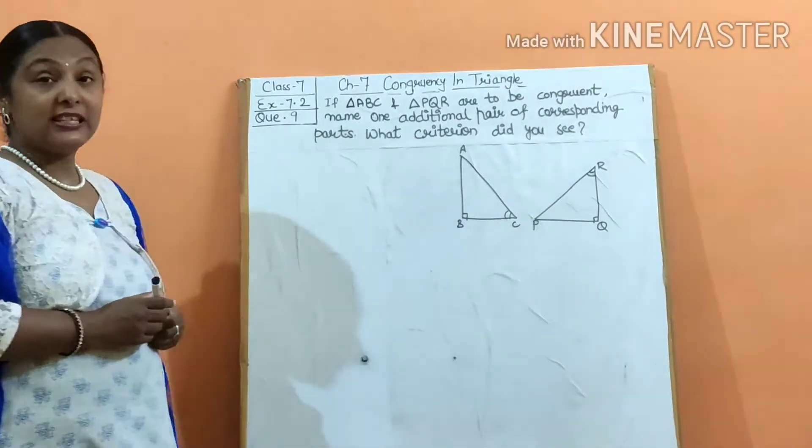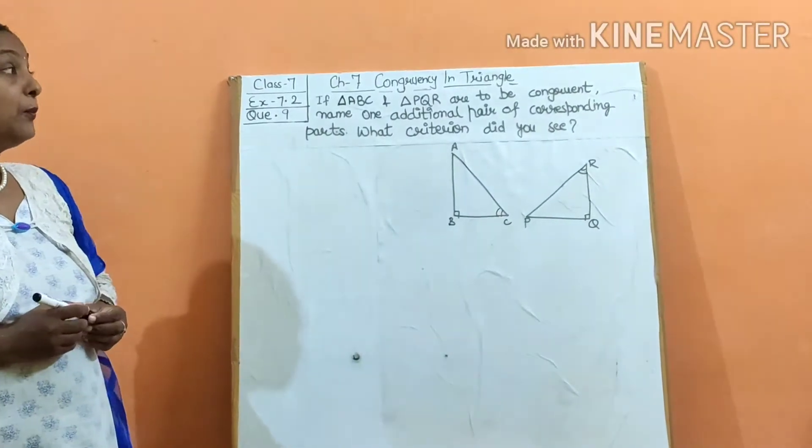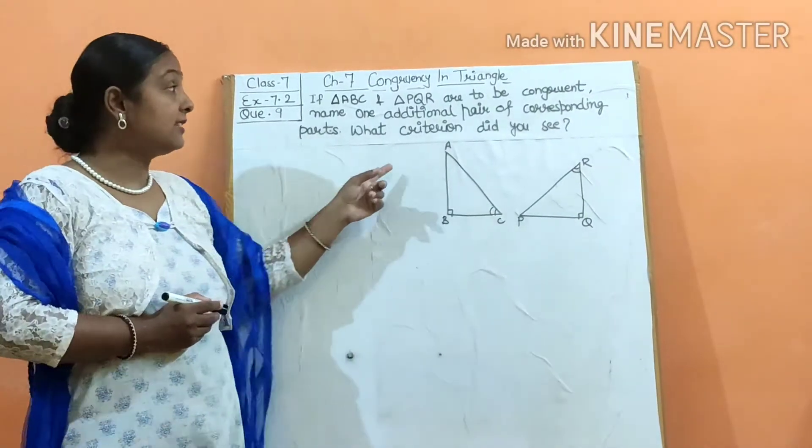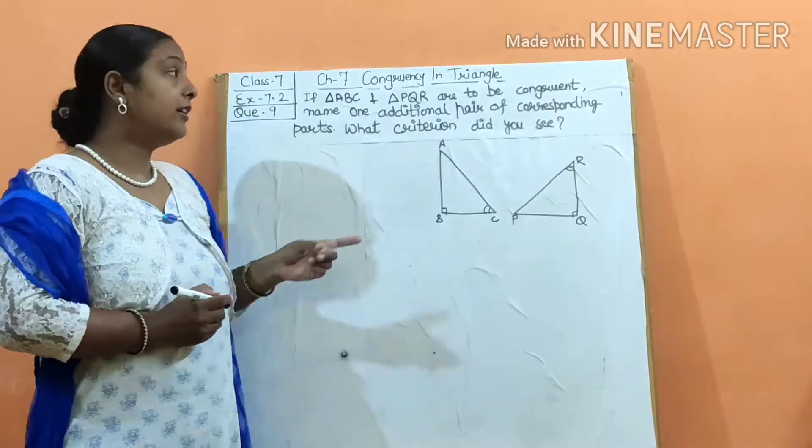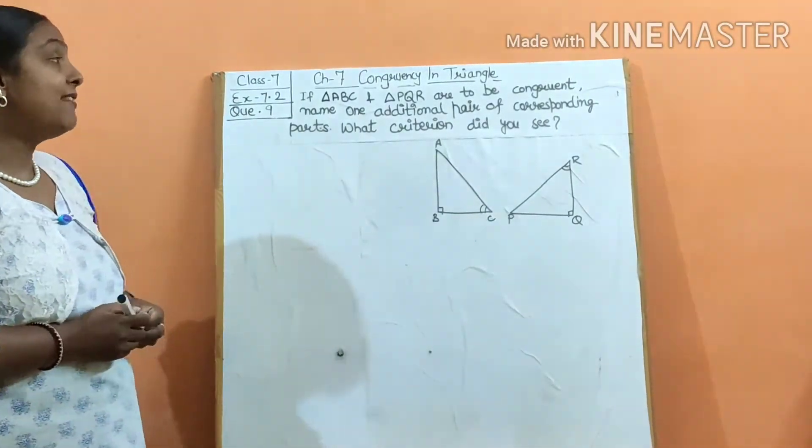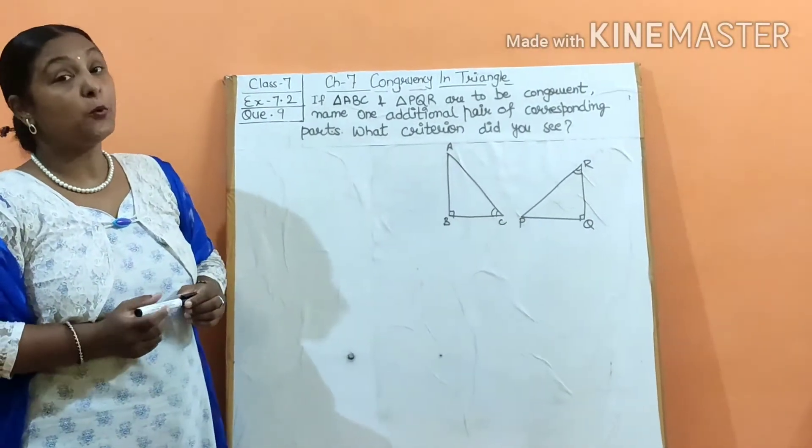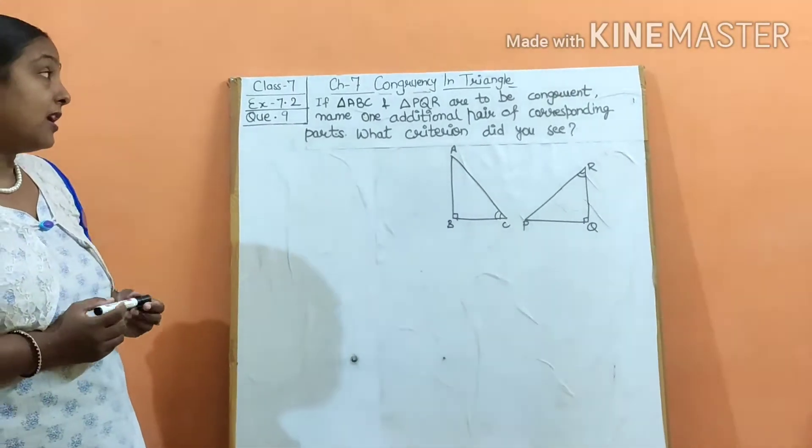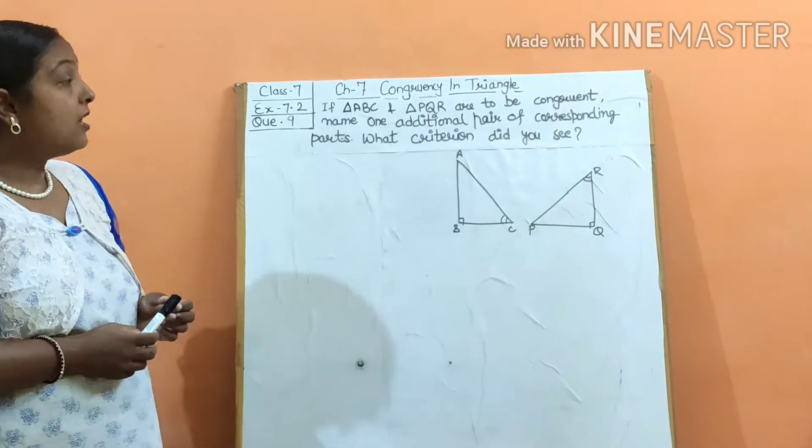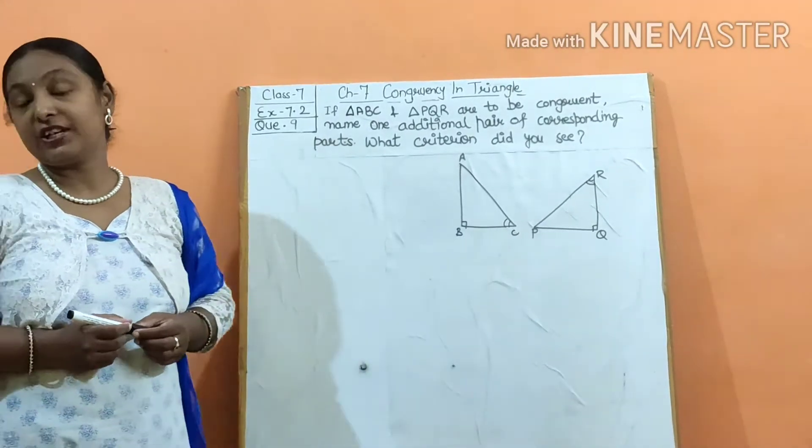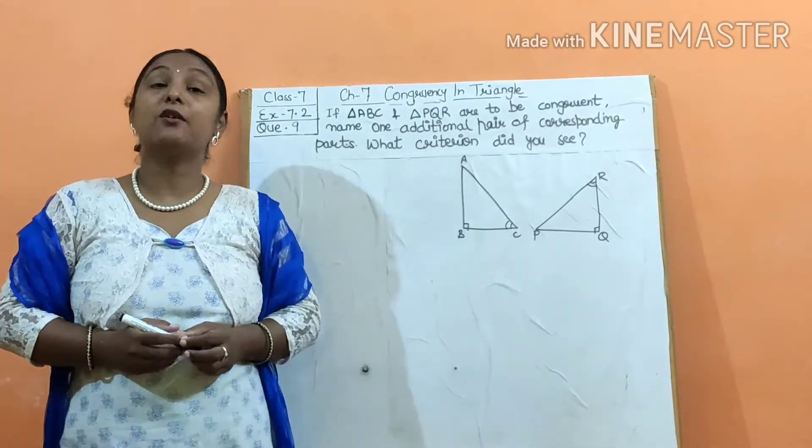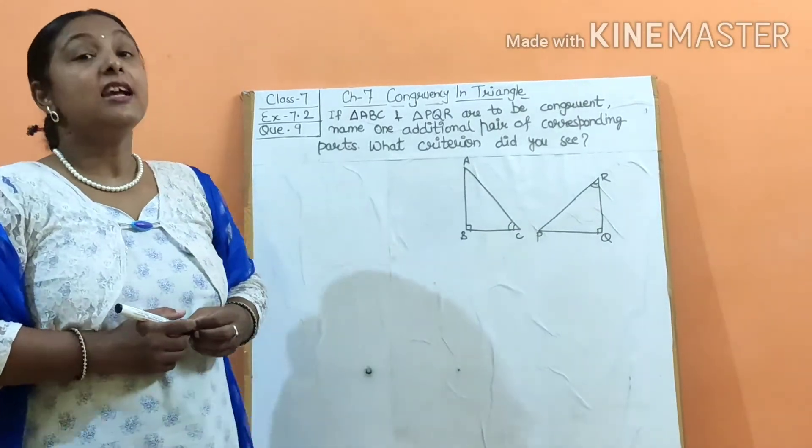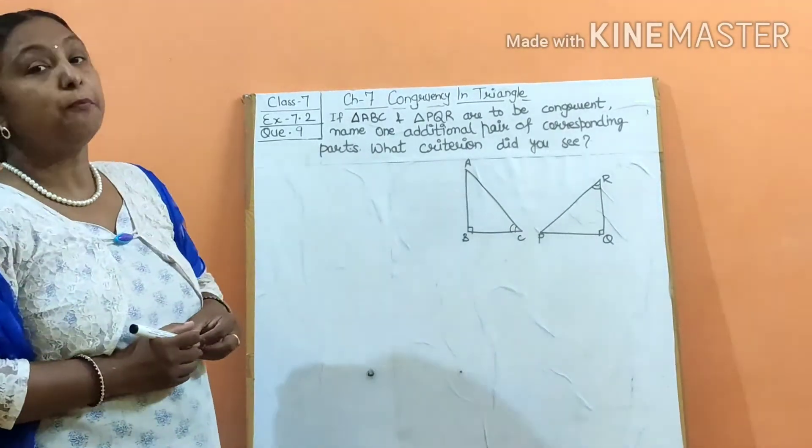If triangle ABC and PQR are to be congruent, the two triangles are ABC and PQR. Name one additional corresponding part. And now, which criterion? Which criterion is congruent and proves it.